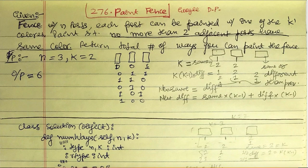We have a fence that has n posts and each of the posts can be painted with one of k colors. The condition is that we paint the posts such that no more than two adjacent posts have the same color.